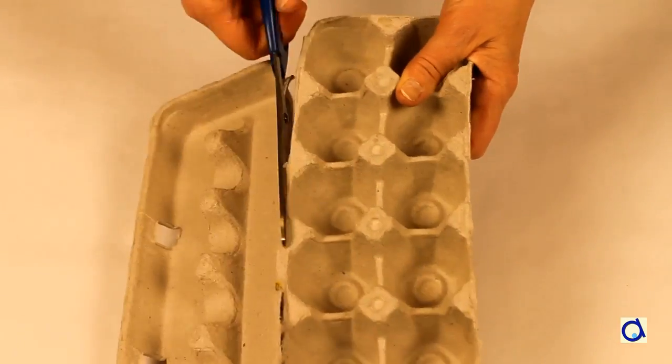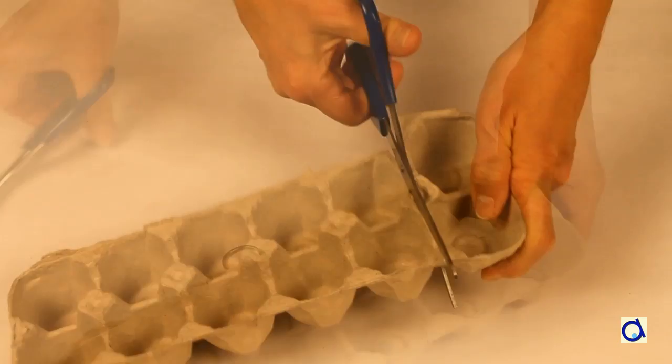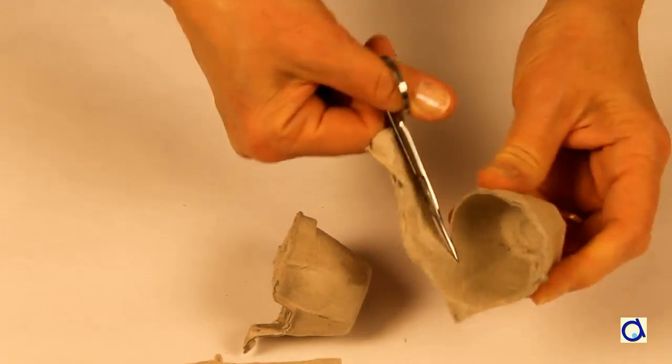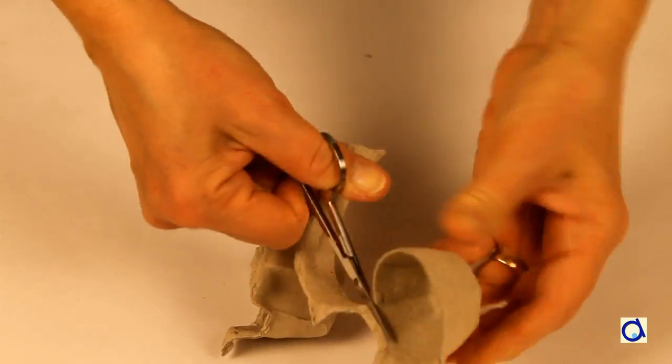For a turtle, you will need to cut one cell of an egg carton. Start by separating a cell of the egg carton with big scissors and then trim the edge with small scissors.